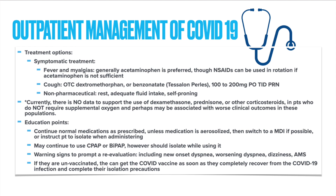Additionally, educate your patients on symptoms to monitor for — for example, new onset dyspnea, worsening dyspnea, dizziness, or altered mental status. Lastly, educate patients who are not vaccinated that they are able to get the vaccine as soon as they are completely recovered from COVID and complete the required isolation precautions. This also applies to patients who contract COVID after their first dose — once they completely recover and finish their isolation precautions, they may get their next shot.